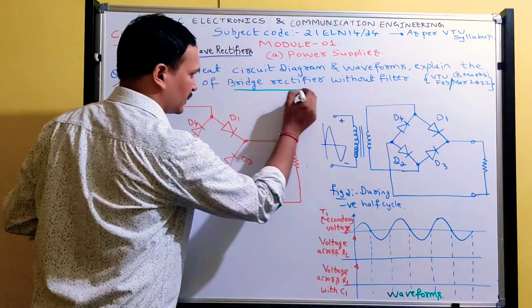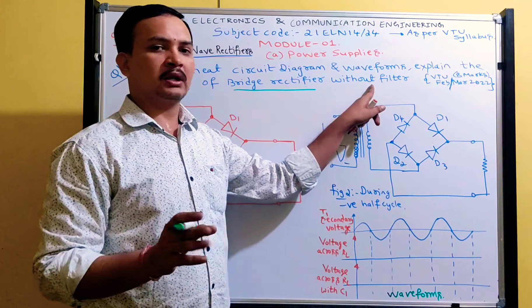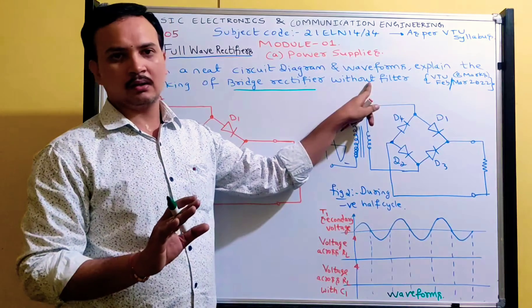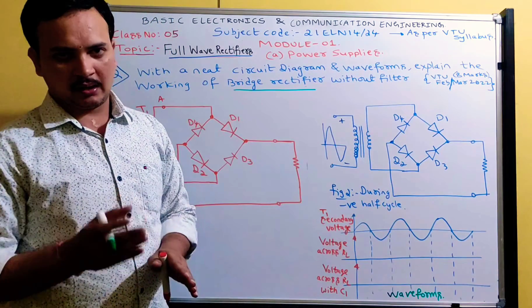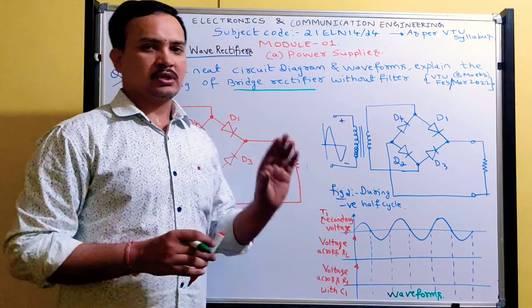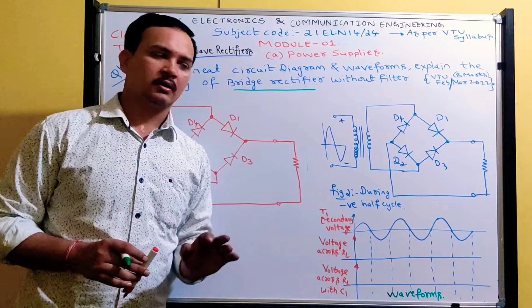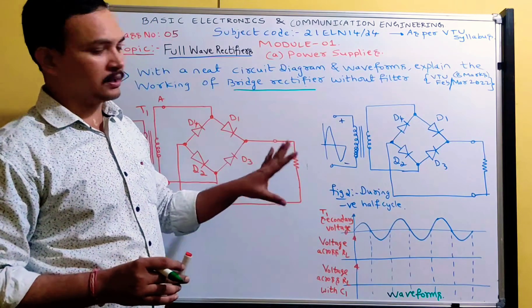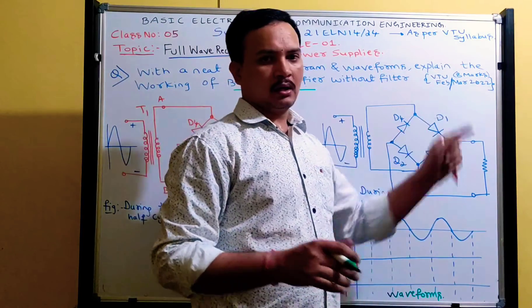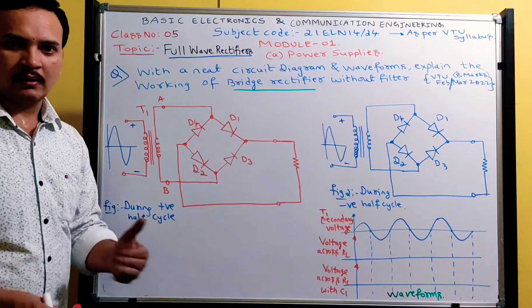The exam question can ask: 'With a neat circuit diagram and waveforms, explain the working of a bridge rectifier without filter.' Without filter means without smoothing circuits. The same question can repeat asking 'with filter.' I will explain the with-filter case at the end. This question was asked for 8 marks in the previous exam.